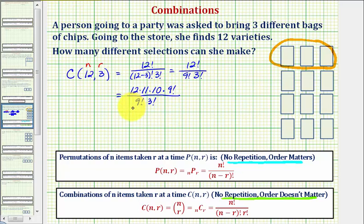Notice this makes it much easier to simplify. Nine factorial over nine factorial simplifies to one. And now we're left with twelve times eleven times ten, divided by three factorial, which is three times two times one.